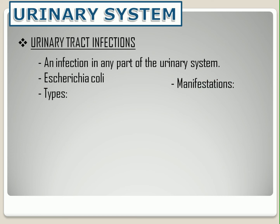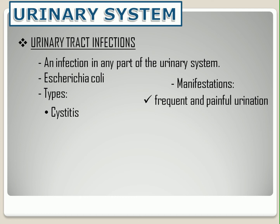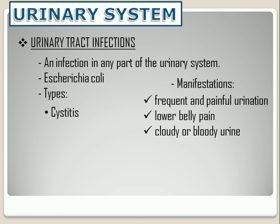Since a UTI can happen in different parts of the urinary tract, each type is based on which part is infected. Cystitis is the infection of the bladder — you might feel that you need to pee a lot, it might hurt when you pee, and you may also have lower belly pain and cloudy or bloody urine. Urethritis is the infection of the urethra, which can cause a discharge and burning sensation when you pee.